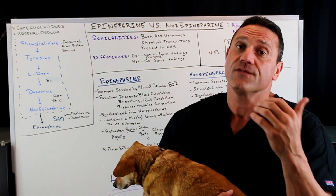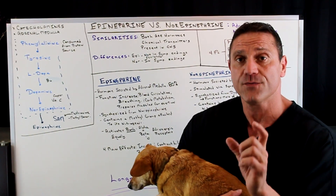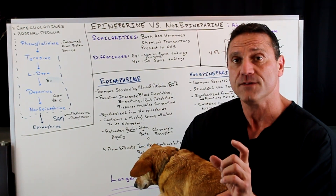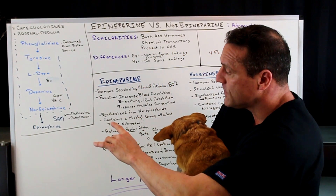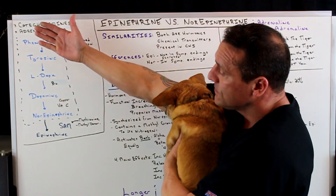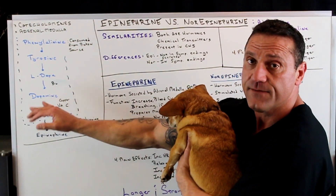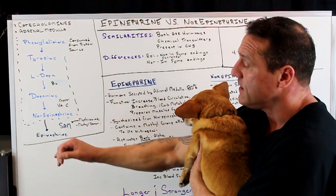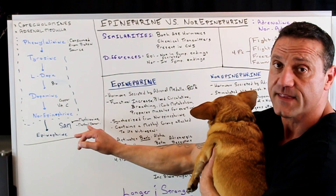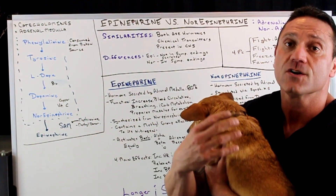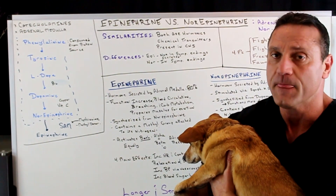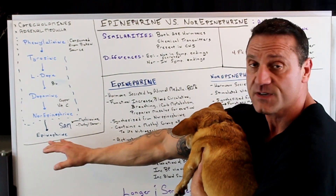Norepinephrine gets converted to epinephrine through a methyl group — a methyl donor released from methionine, SAM. So the pathway comes down to norepinephrine, and then with the methyl donor from methionine SAM, norepinephrine turns into epinephrine, which is the final product.